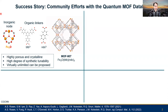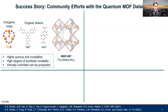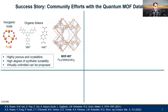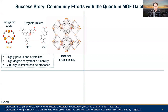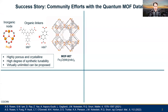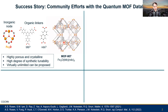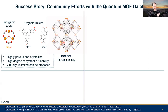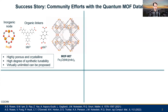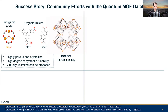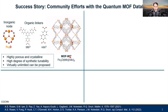Metal organic frameworks, or MOFs, are composed of discrete molecular building blocks — really an inorganic node and an organic linker or set of linkers that stitch together to form these crystalline lattices, like this example you see here. They're highly porous, highly crystalline, have a high degree of synthetic tunability, and depending on the building blocks you choose, you can tailor their properties for a particular application of interest.